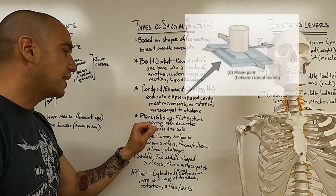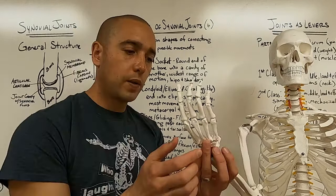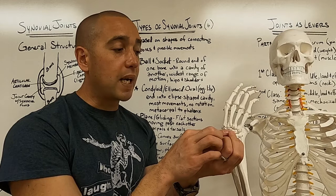Next are gliding joints or plane joints. It's where there are flat sections of two bones that just move past each other or they can rotate slightly. These are the places where the carpals or the tarsals connect. So all of these flat parts of the wrist bones where they touch can allow for some gliding or slight rotation.